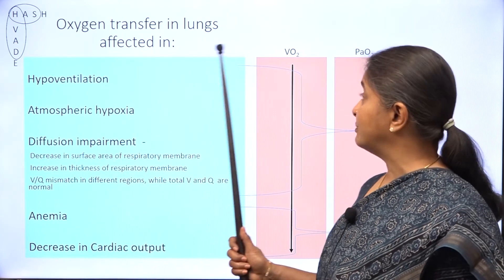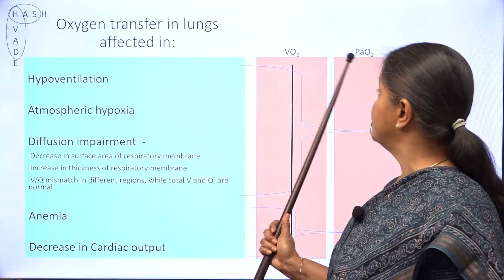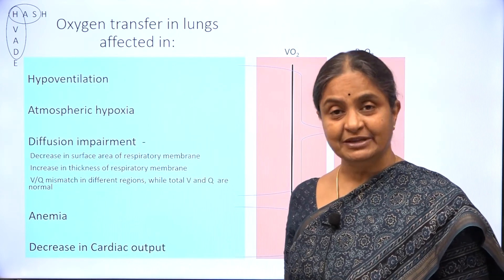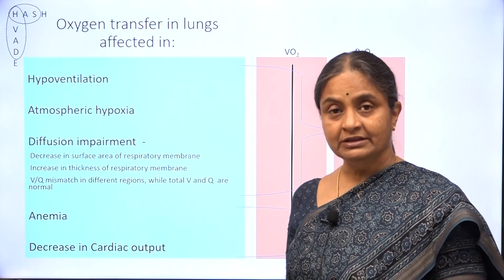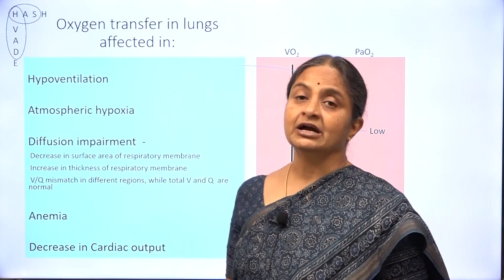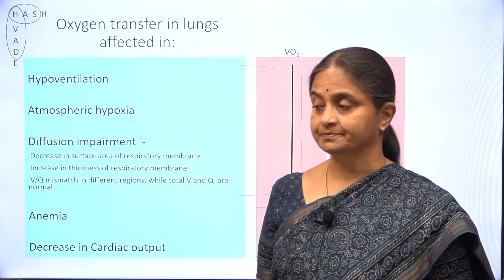We will see what happens to carbon dioxide diffusion in each of these cases — what happens to VCO2 and what happens to arterial PCO2. That is how we will go about carbon dioxide diffusion.